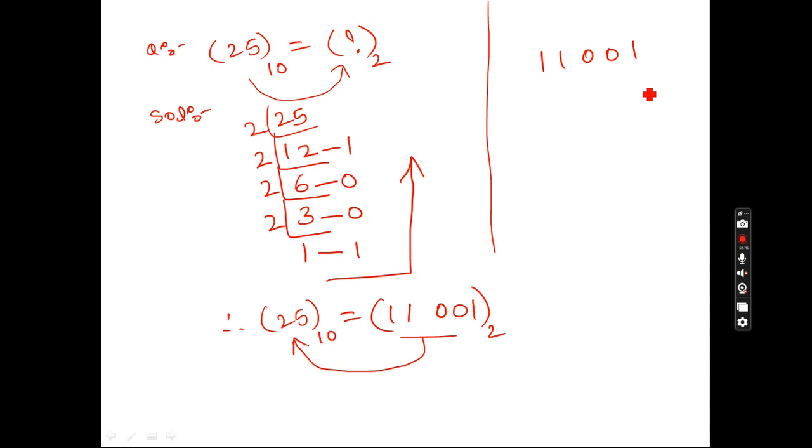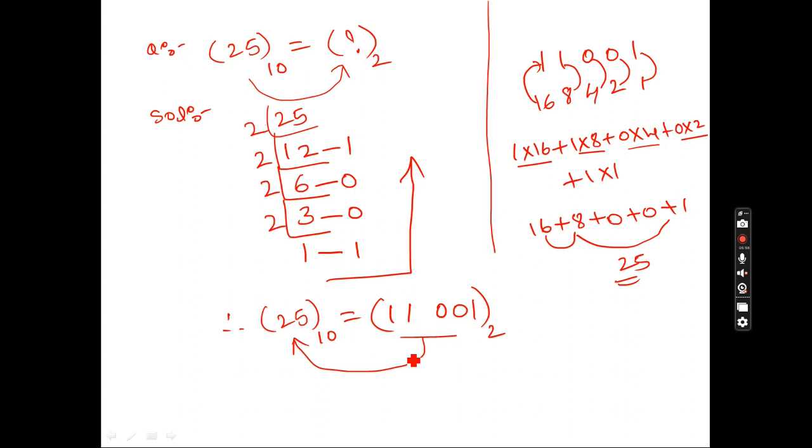Whatever you do, you need to check. What do you mean? When binary to decimal conversion, 2 power 0, 2 power 1, 2, 4, 8, 16. So 16 into 1, 8 into 1, 4 into 0, 2 into 0, 1 into 1. The answer is 16 plus 8 plus 1 equals 25. So this is correct.